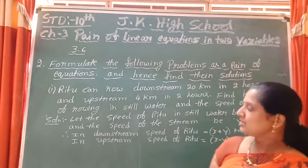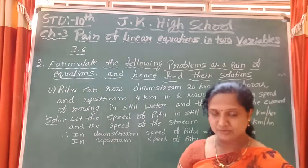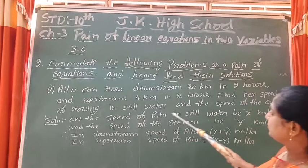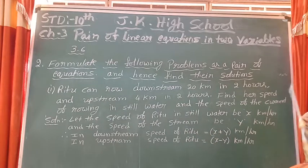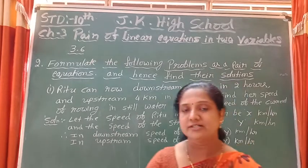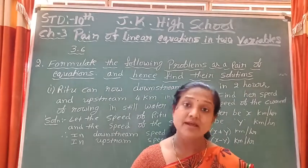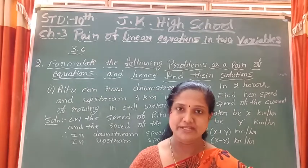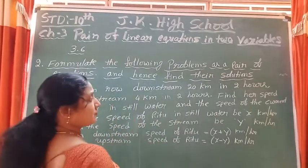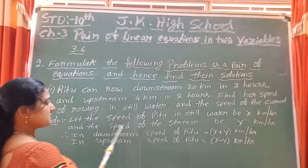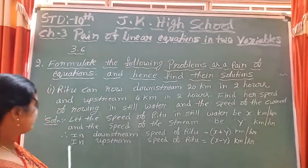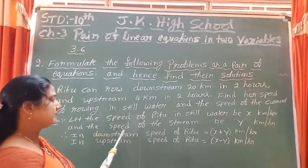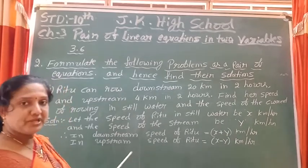We don't know both values, so we need to find them. Let the speed of Ritu in still water be x km per hour. I will find out the value of x, that is the speed in still water. And let the speed of the stream be y km per hour. That is also what we need to find out.